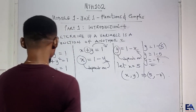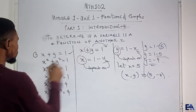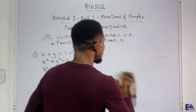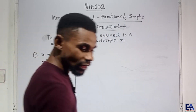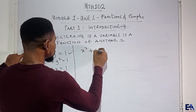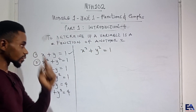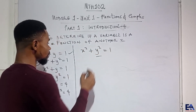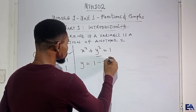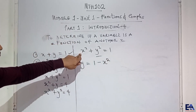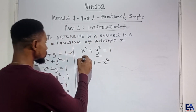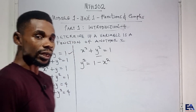Now let's check the second example. We have x squared plus y squared is equal to 1. Let's make y the dependent variable. We have y squared is equal to 1 minus x squared, because this x squared was positive and by the time it gets to the other side it becomes negative, and 1 still remains. So we have y squared is equal to 1 minus x squared.